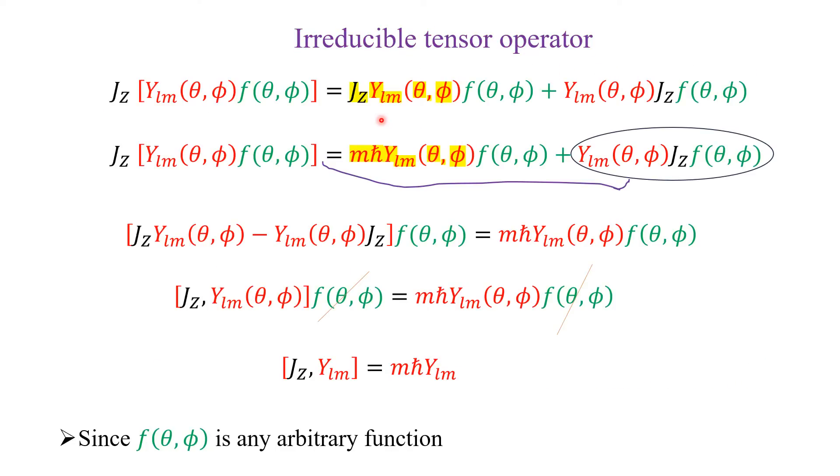Now, take the right-hand side. When J_z act on Y_{l,m}, you will get the eigenvalue M ℏ. That we have seen when we are dealing with angular momentum operator. So, the eigenvalue is M ℏ.